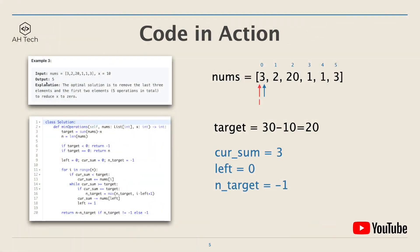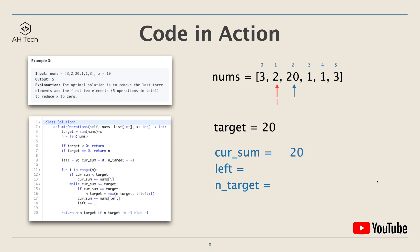Let's see the code in action with example three. The target variable is the sum of nums which is 30, minus x which is 10, so target is 20. Initially, both left and right pointers point to the first element, and n_target is negative one. We move the right pointer: current sum becomes 3 plus 2 which is 5, then move right again so current sum becomes 25, which is bigger than 20, so we start moving the left pointer.